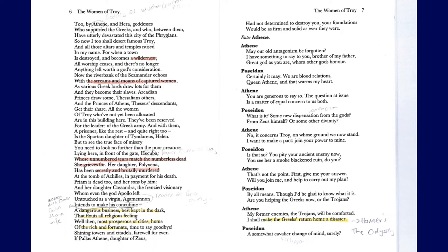'In payment for his death, Priam is dead too, and her sons by him, and her daughter Cassandra, the frenzied visionary whom even the god Apollo left untouched as a virgin — Agamemnon intends to make his concubine. A dangerous business, best kept in the dark, that flouts all religious feeling.' There is a lot to take in here. Cassandra is a prophetess who can see into the future, but no one believes her. She's been untouched as a virgin by the god Apollo, yet Agamemnon is going to make her his concubine — essentially a sex slave. There is a real lack of morality here from Agamemnon, who is a leader of the Greek army, and he's going to be punished for his behavior eventually — the audience is very much aware of that.